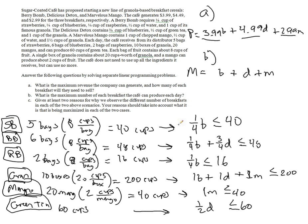Now we got to think about what uses the strawberries. Well, the berry bomb uses a quarter cup per berry bomb. So a quarter of a cup times the number of meals must be less than or equal to 40. Similarly, the blueberries are used by the Berry Bomb and the Delicious Detox. A quarter cup per Berry Bomb plus three quarter cups per Delicious Detox must be less than or equal to the 48 cups available.